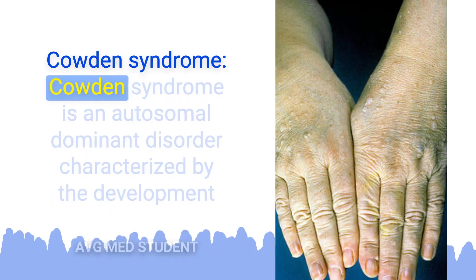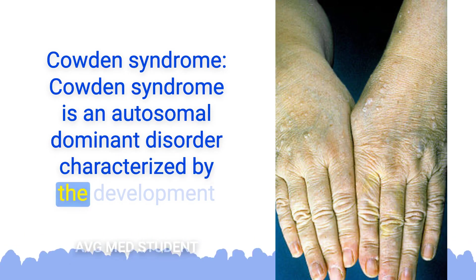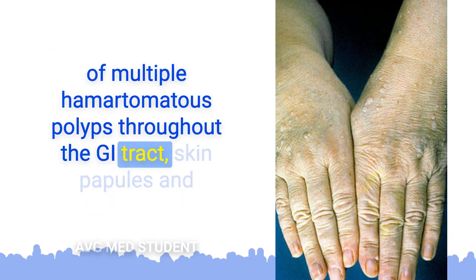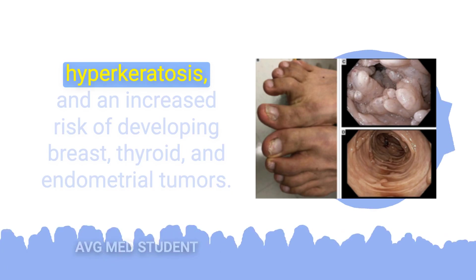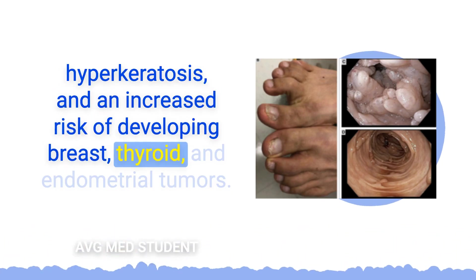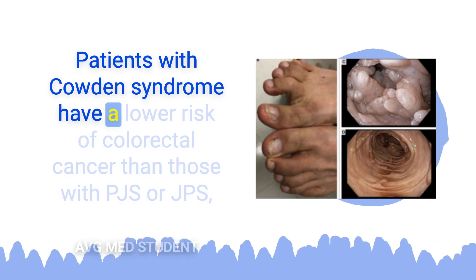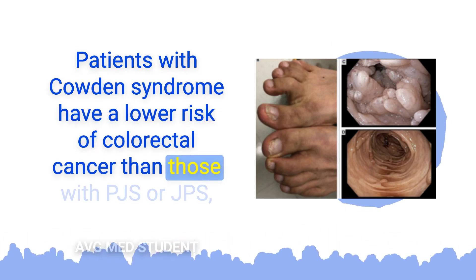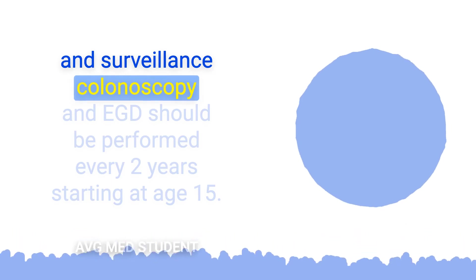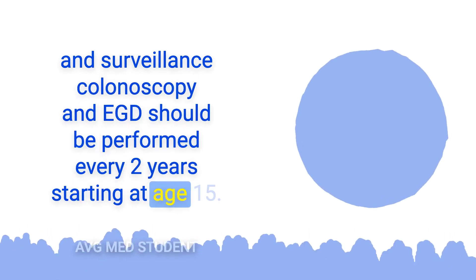Cowden syndrome is an autosomal dominant disorder characterized by multiple hamartomatous polyps throughout the GI tract, skin papules, and hyperkeratosis, with an increased risk of developing breast, thyroid, and endometrial tumors. Patients with Cowden syndrome have a lower risk of colorectal cancer than those with PJS or JPS, and surveillance colonoscopy and EGD should be performed every 2 years starting at age 15.